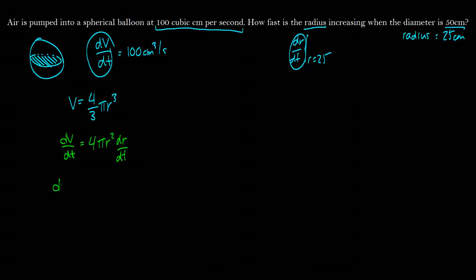So this will be 4 pi r squared times dr/dt. And again, it's just 4 thirds times 3 is 12 thirds, which is 4. So I simplified it right off the bat. And now we want to solve for dr/dt. So dr/dt is equal to the volume, the derivative of the volume, multiplied by 1 over 4 pi r squared.